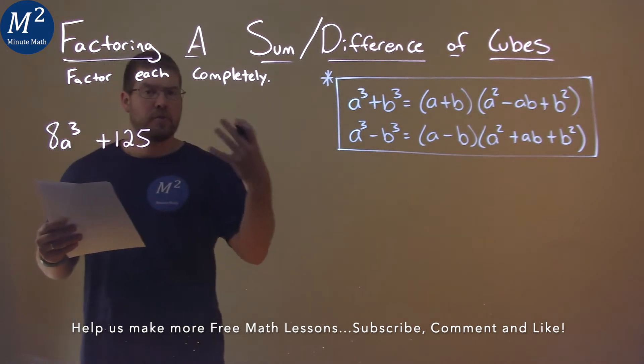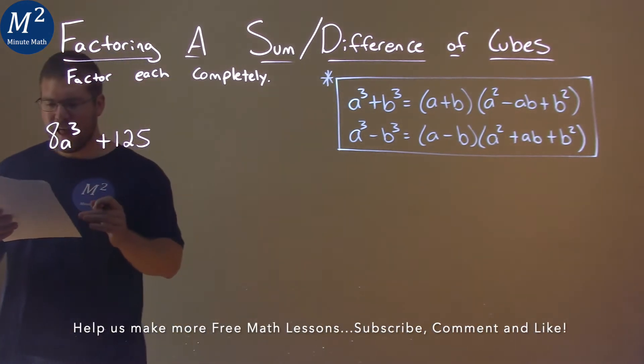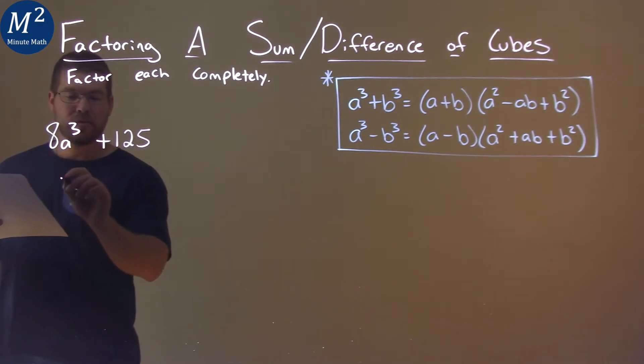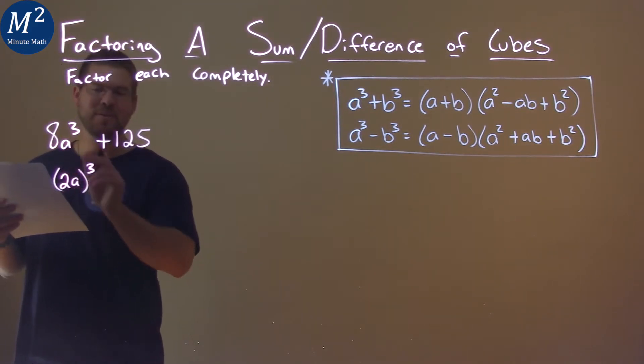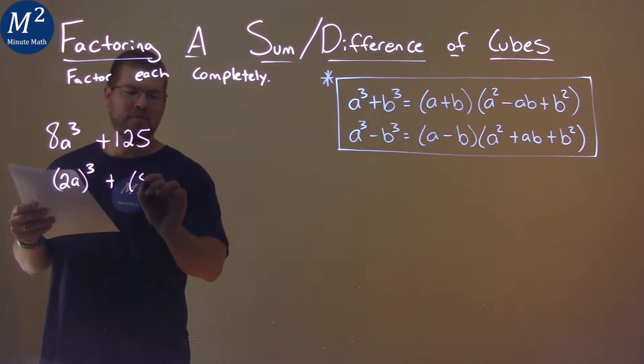Well, we want to write this as a sum of cubes. So, 8a cubed can be written as 2a all cubed. 2 cubed is 8, 8a cubed is a cubed. 125 is the same as 5 cubed.